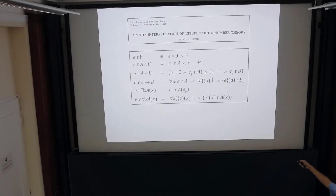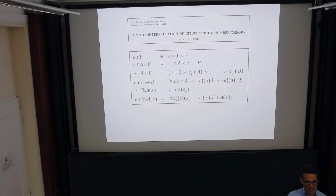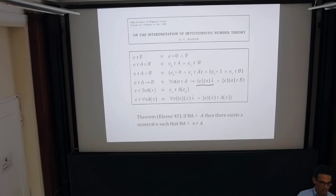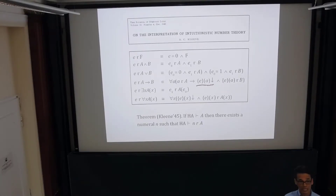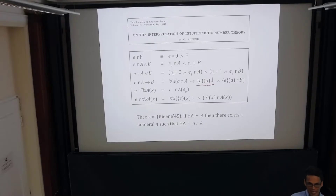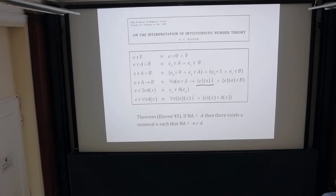The code witnessing a disjunction is a pair: one component says which disjunct you are witnessing, and the other is a witness for that disjunct. Crucially, e could be undefined if the premise is false — you don't need e to always be defined. Only when the input a is a realiser for A does e(a) need to be defined; otherwise e(a) can be undefined. This is crucial for interpreting Markov's principle — Kleene's realisability interprets Markov's principle by just searching for a witness.